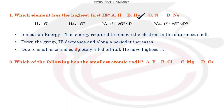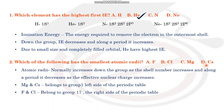The second question: which of the following has the smallest atomic radius? The options are fluorine, chlorine, magnesium, and caesium. Atomic radius represents the size of the atom.